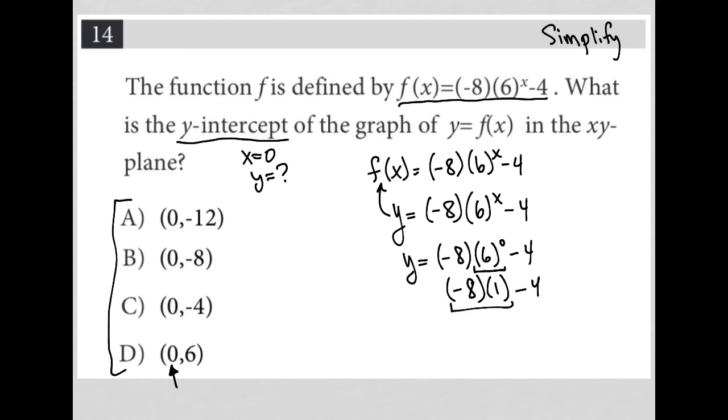Then I have negative 8. I'm multiplying before subtracting because of PEMDAS, order of operations. Negative 8 times 1 is negative 8. And then I have my minus 4. That becomes y equals negative 12.